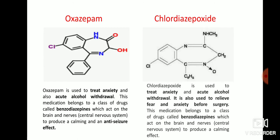The next drug is oxazepam, mainly used to treat anxiety and acute alcohol withdrawal. This medication belongs to the class of drugs called benzodiazepines, which act on the brain and nervous system to produce calming and anti-seizure effects. Chlordiazepoxide is also used to treat anxiety and acute alcohol withdrawal, and can be used to relieve fear and anxiety before surgery. It also comes under benzodiazepines and acts on the brain and nerves to produce a calming effect.